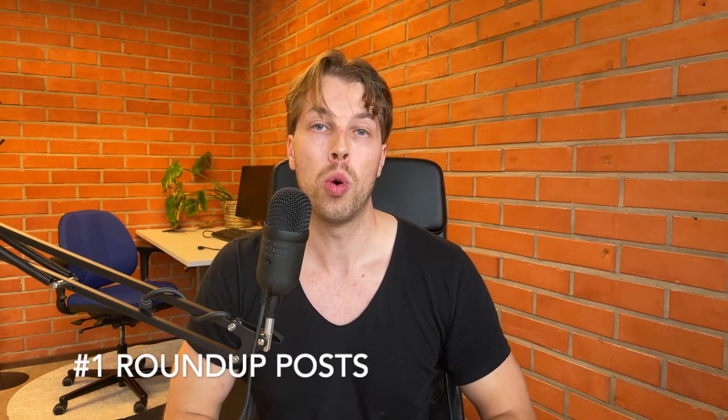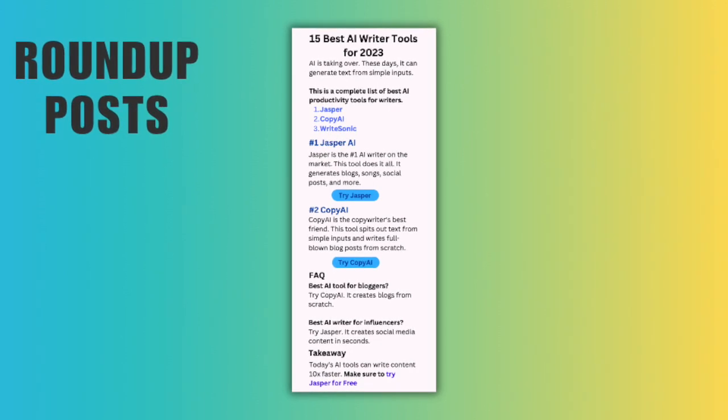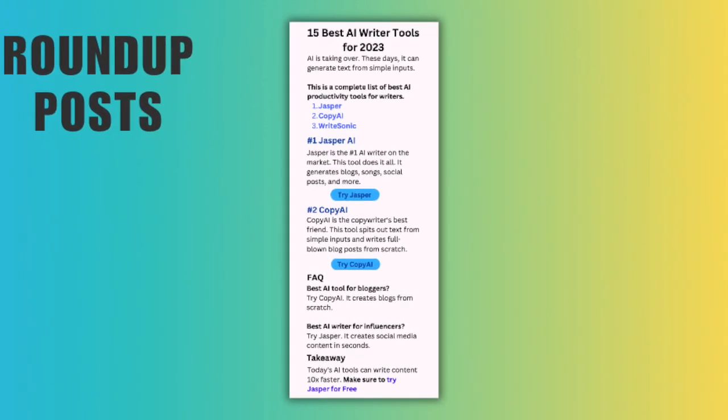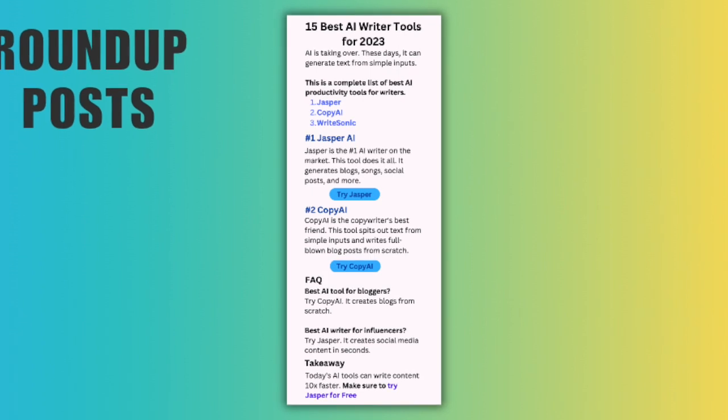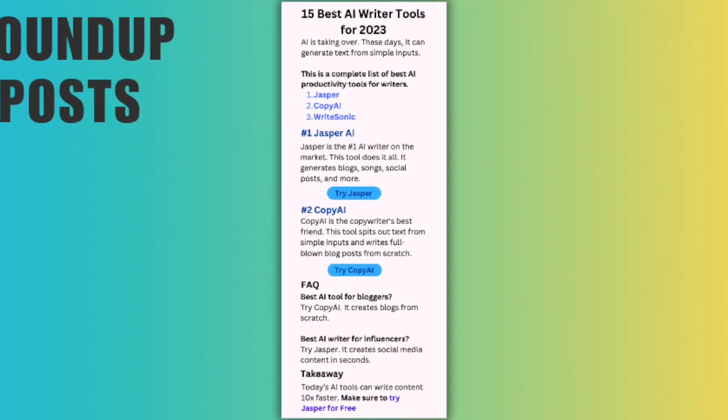There are two main types of affiliate posts. The first is the roundup post, where you list products that are best in a particular category. For example, a roundup post could be something like 'best tennis shoes for kids' or 'best AI writing services for bloggers.' The idea is that you list those products one after the other and then strategically place affiliate links to those products.